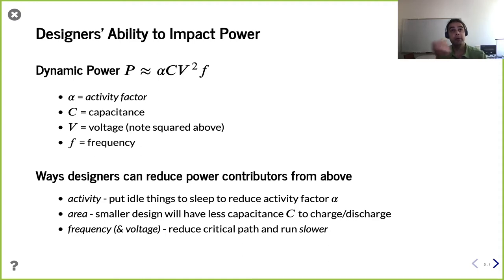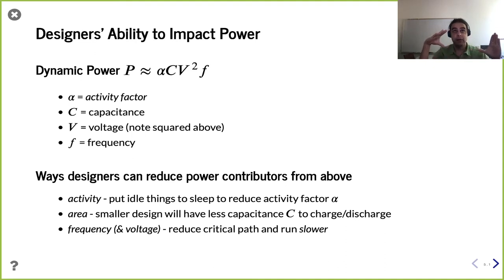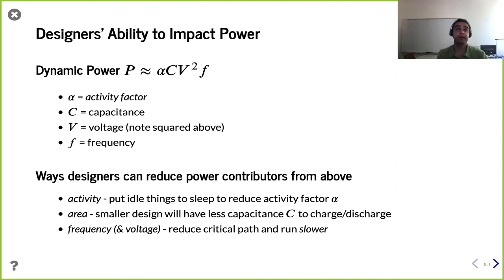Consider a counter: the least significant bit toggles every cycle — activity factor of 1. The next bit changes every other cycle — activity factor of 0.5. The bit after that changes every fourth cycle, and so on. So even though the entire counter might seem to have activity factor 1, at a per-bit granularity much is not changing. In practice, throughout a design, many signals don't change every cycle — the activity factor captures this.